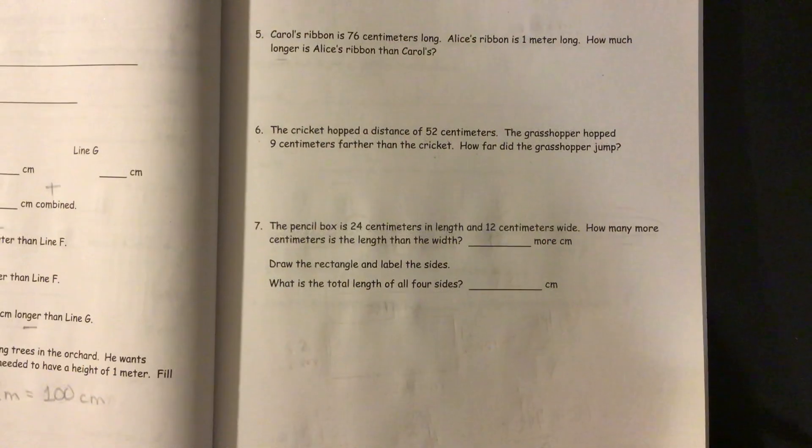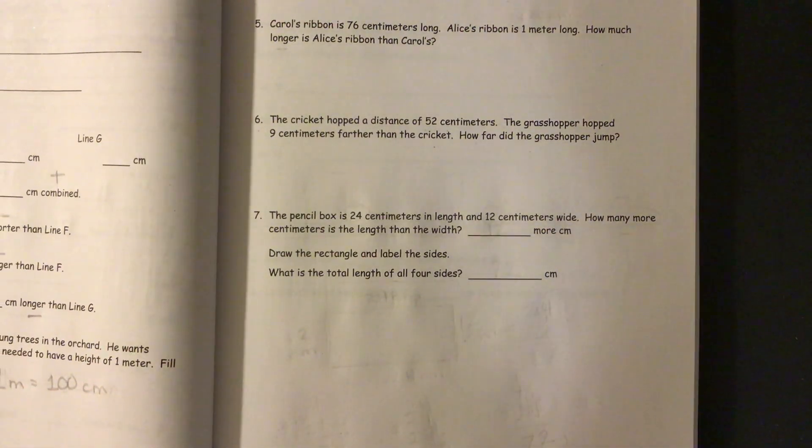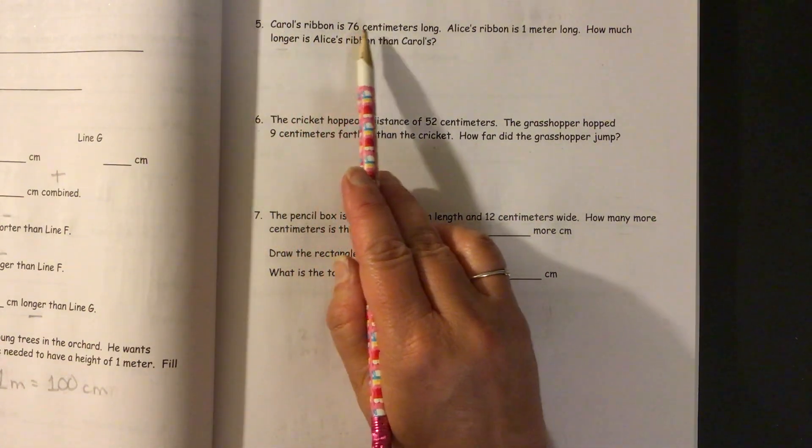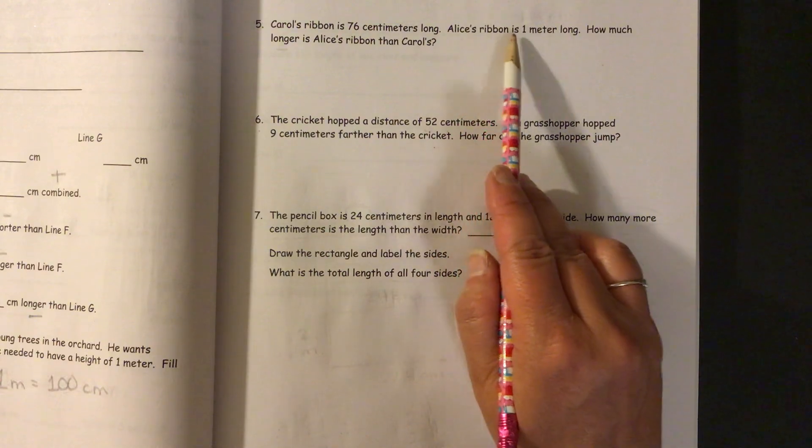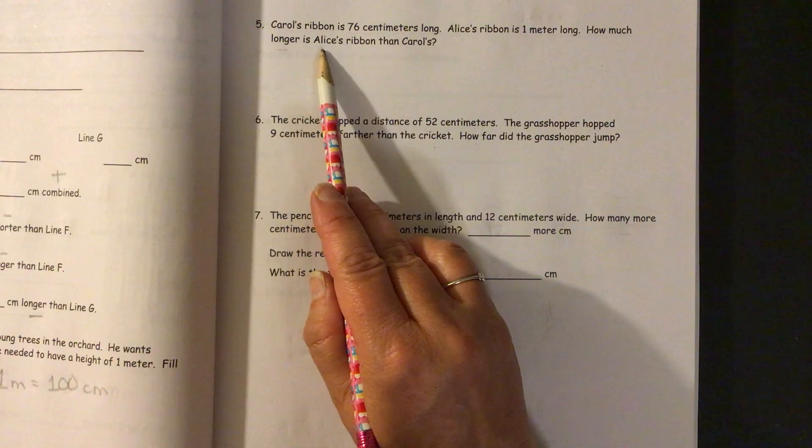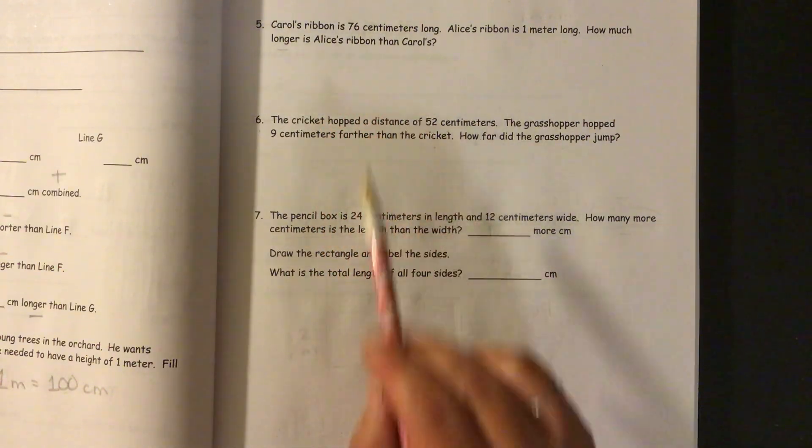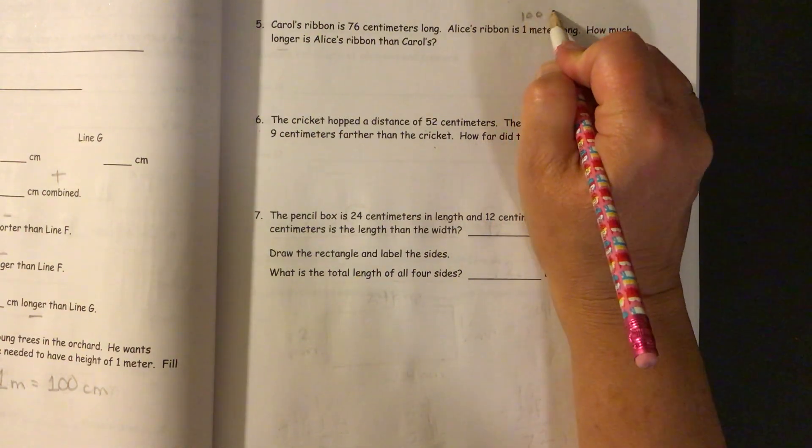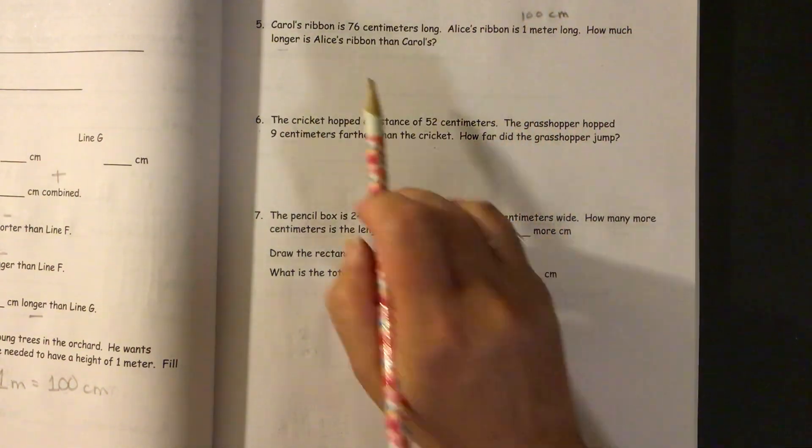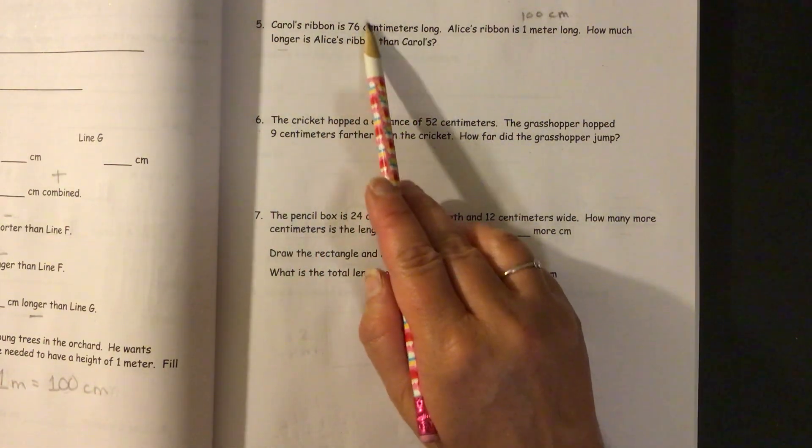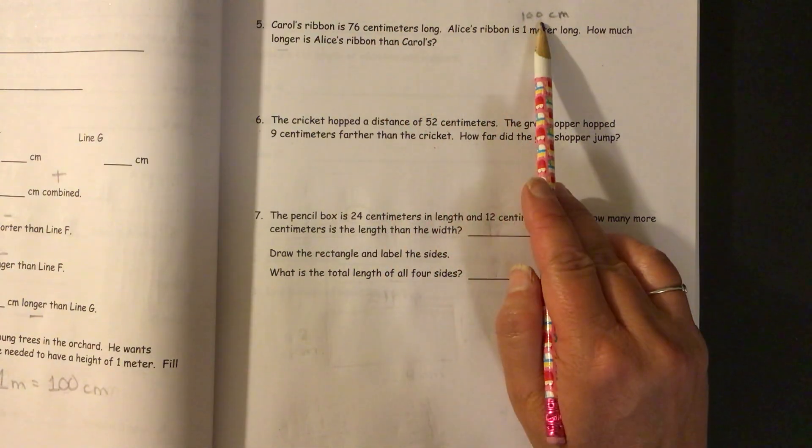And then we have some word problems here. So Carol's ribbon is 76 centimeters long. Alice's ribbon is one meter long. How much longer is Alice's ribbon than Carol's? Remember, one meter equals 100 centimeters. So it's just like number four, where there's how many more you need to get from 76 to 100.